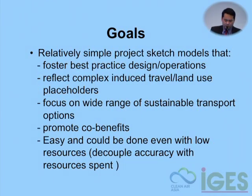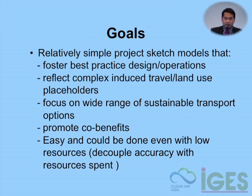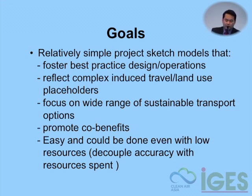The team models are relatively simple project sketch models that foster best practice design and operations. I'll show you the BRT scorecard which is integrated in the BRT model, which considers the quality of the BRT in the calculation of emissions, reflecting complex induced and travel land use placeholders. There are placeholders for extrapolating the impacts on a corridor to a wider scale, and we focus on the wide range of sustainable transport options.